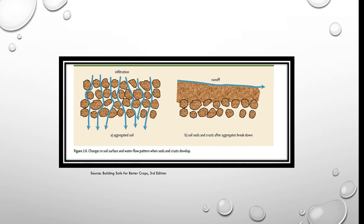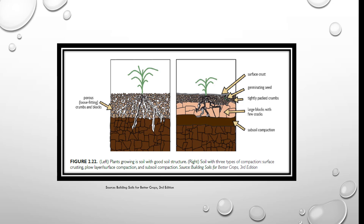Looking at this picture of infiltration: in an aggregated soil, water is going to infiltrate easily. In a compacted or crusty situation, you're going to have a real problem with runoff. Here's another picture showing a surface crust where the roots aren't growing very well.